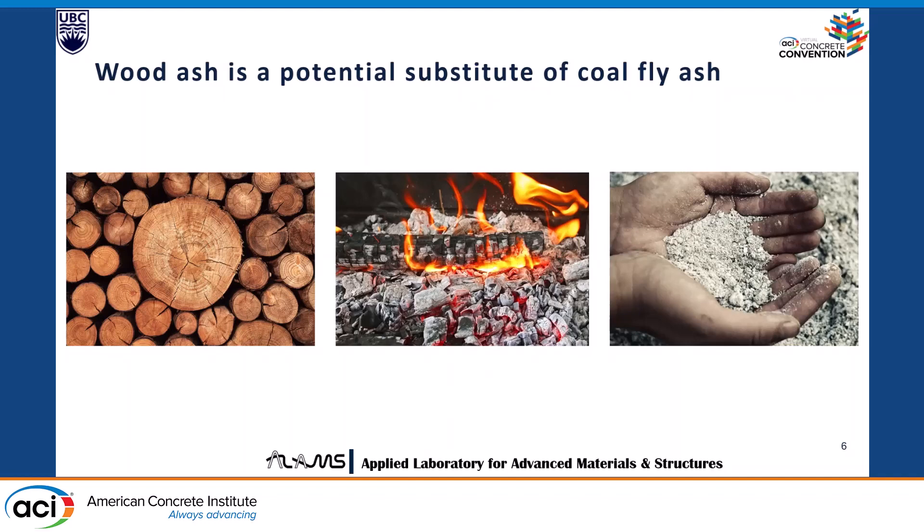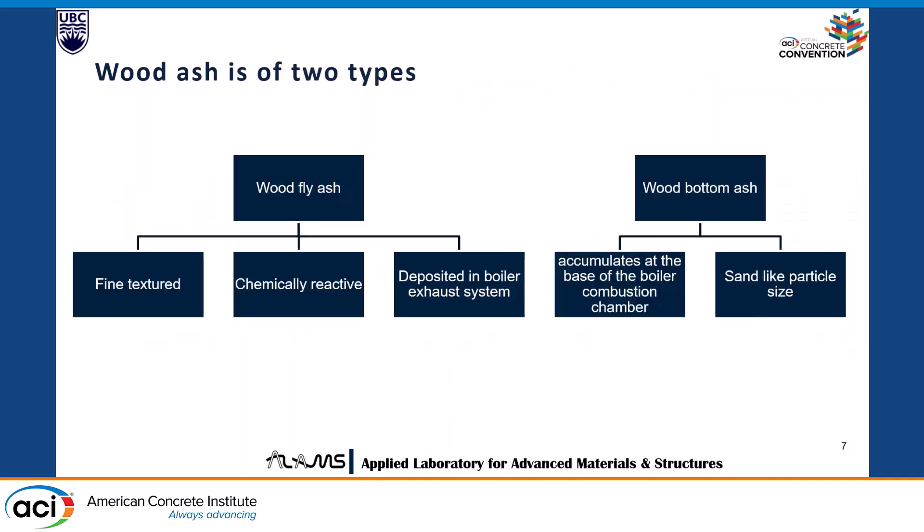There are two types of wood ash. One is wood fly ash, which is more finely textured and more chemically reactive, and it is deposited in the boiler exhaust system. The other is wood bottom ash, which accumulates at the base of the boiler, is coarser, and is more sand-like.